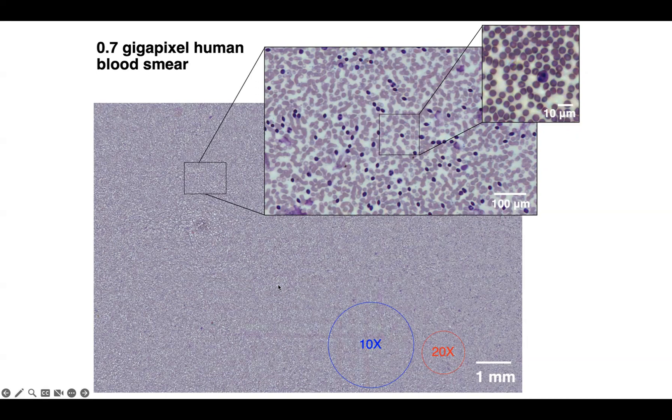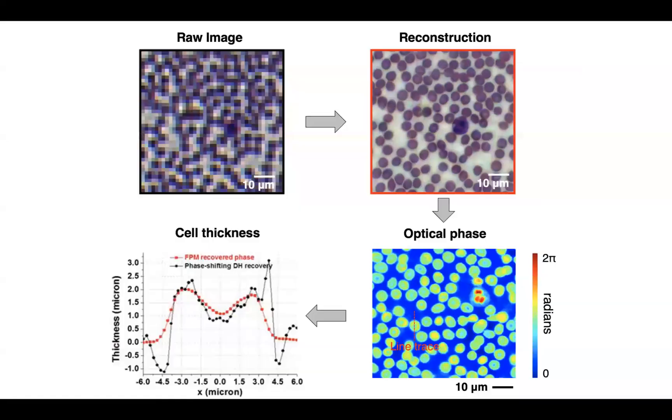So one way to think about Fourier ptychography is as a way to get a specified resolution but over a much larger field of view. The field of view here is that of a 2x but of course it depends on the lens you select, the size of the LED array you use, etc. Of course here in Fourier ptychography we didn't have to scan anything. All we did is we quickly turned on a series of LEDs and used a computer algorithm to reconstruct this final result.